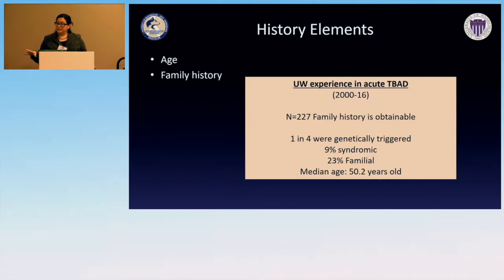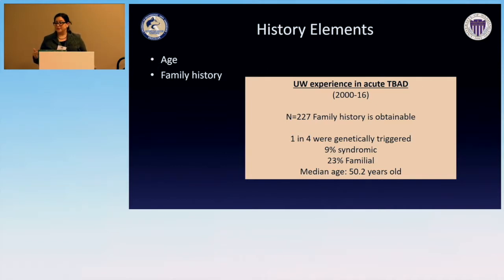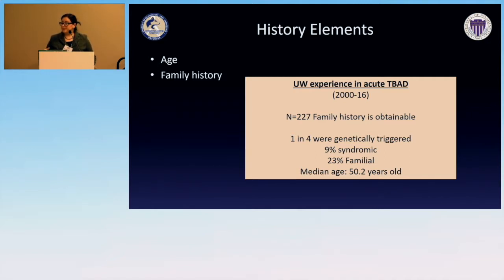I'm showing preliminary data from our UW experience looking at 227 people where we obtained complete family history. One in four had a dissection that was genetically triggered — they had a family history of aortic dissections, aneurysms, or sudden death. About 9% were syndromic, mostly Marfan syndrome, and 23% had a familial history. The median age was 50 years old.